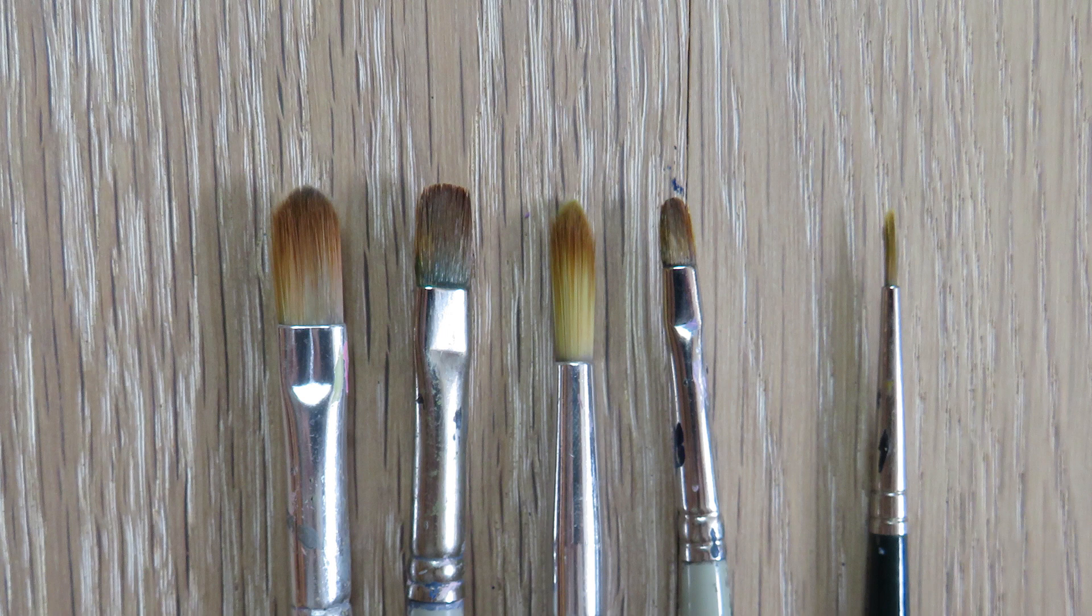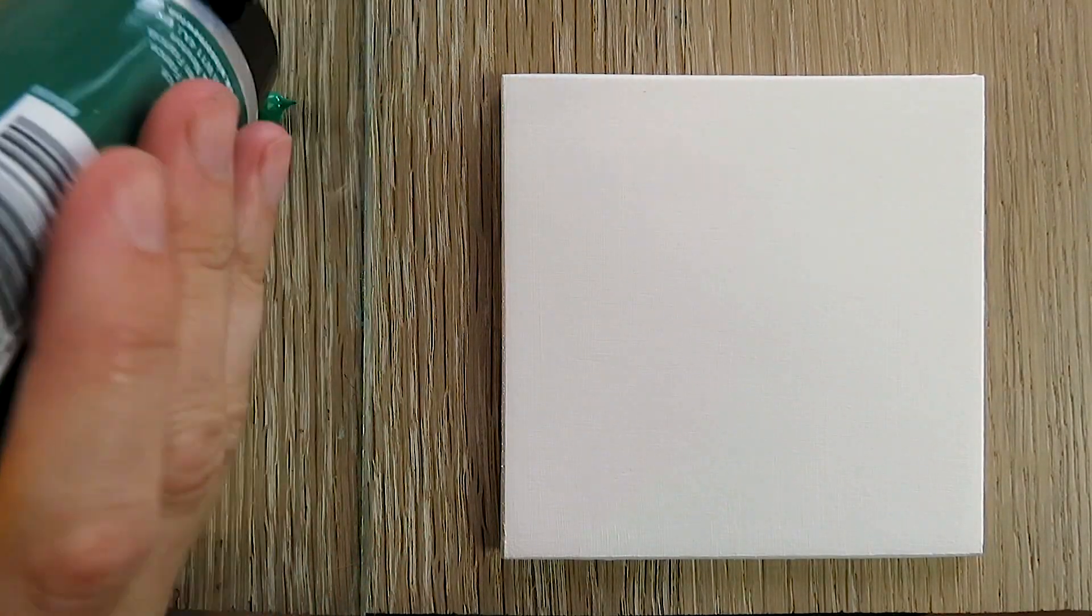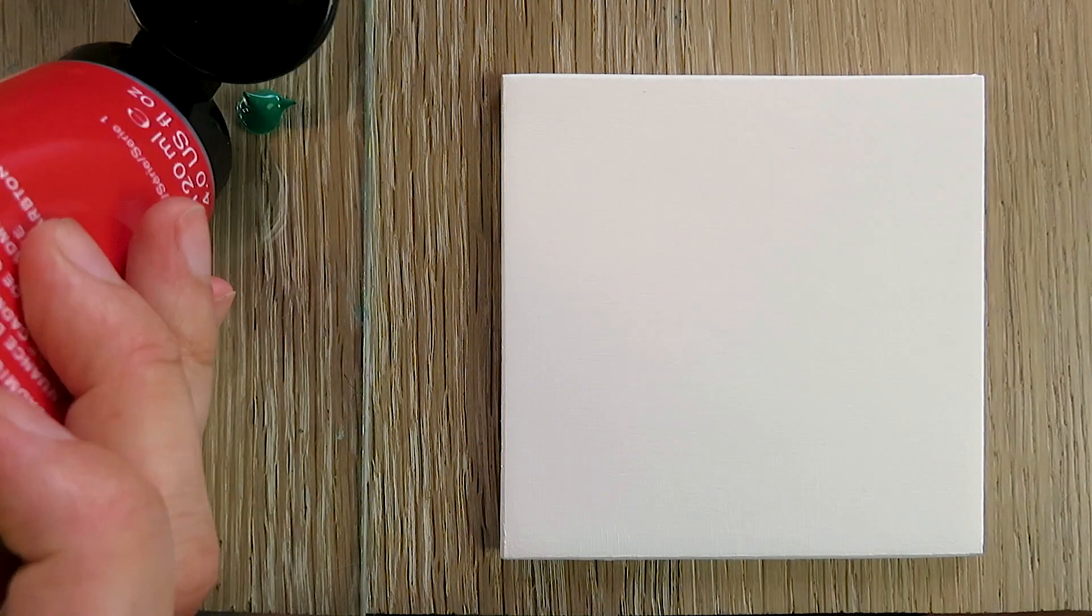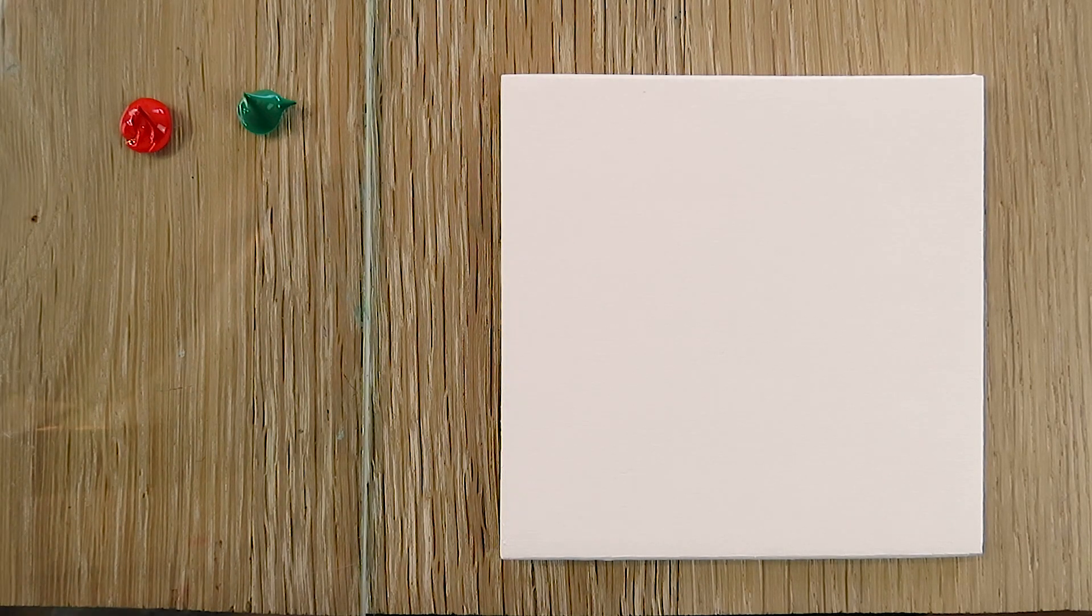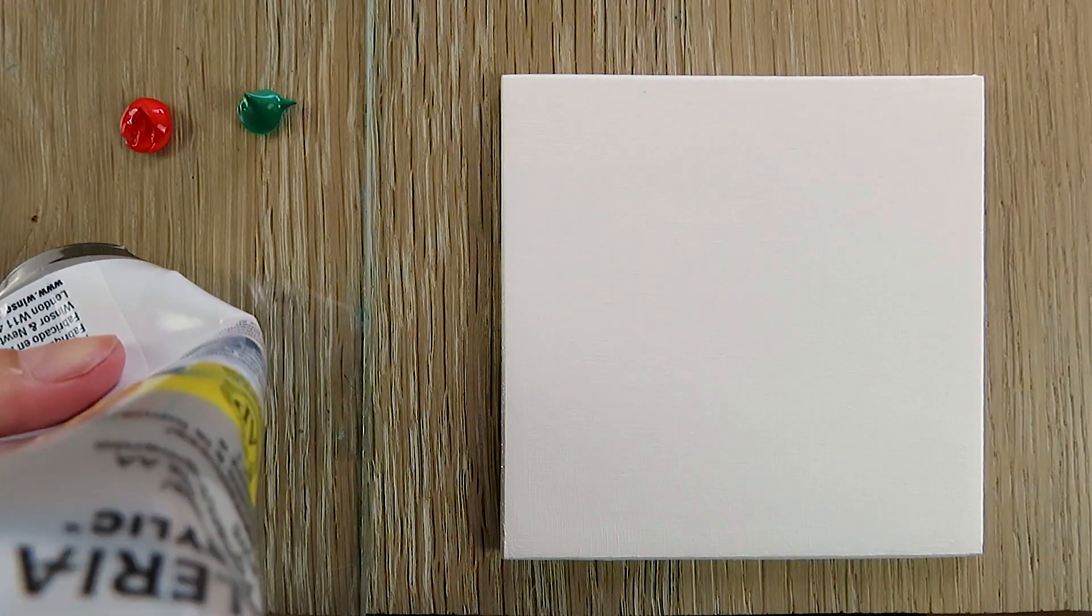The brushes we need are filbert brushes for the background, a small round brush or small flat brush for the trinity knot, and a tiny brush for details. As usual, I paint another painting in acrylics because it dries fast, which makes the process easier. After that we'll continue with oils.